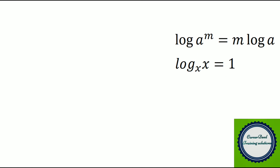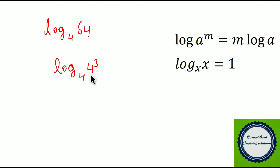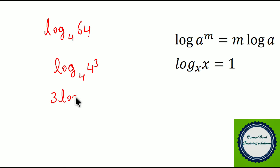Now moving to our first question: log of 64 to the base 4. Log 64 can be written as log of 4 cube to the base 4. This is in the format of log A power M, so we can write it as M into log A, giving 3 into log 4 to the base 4. Since log X to the base X equals 1, we get 3 into 1, which is 3. The answer is 3.